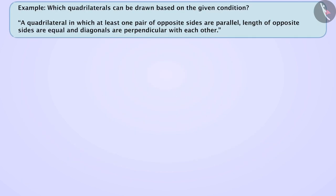Next example: which quadrilaterals can be drawn based on the given conditions? A quadrilateral in which at least one pair of opposite sides are parallel, the length of opposite sides are equal, and diagonals are perpendicular to each other. The first condition is that the quadrilateral must have at least one pair of parallel opposite sides. Among the given quadrilaterals, which ones have a pair of parallel opposite sides?